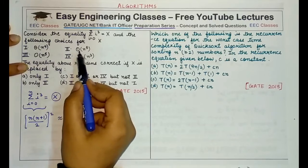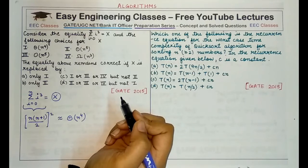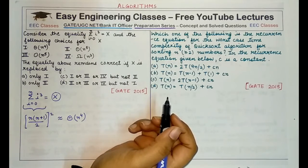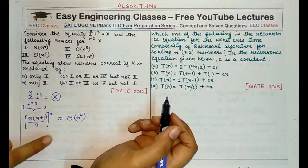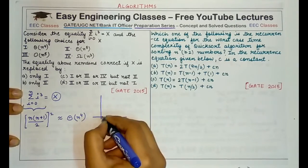Now coming to the second option, theta of n raised to power 5. This option is not correct. Why? Because theta bound means that it is a tight bound. However, we are specifying here that this expression evaluates to a tight bound of n raised to power 4. Therefore, we can say that n raised to power 5 upper bounds this expression but we cannot say that it is a tight bound or theta bound. Theta bound means that the value would lie between a lower bound of n raised to power 5 and below the upper bound of n raised to power 5.